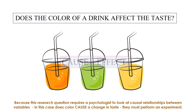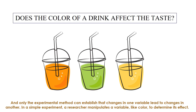How does a psychologist look at a causal relationship between variables — in this case, does color cause a change in taste? They must perform an experiment. Only the experimental method can establish that changes in one variable lead to changes in another. In a simple experiment, a researcher manipulates a variable, like color, to determine its effect.